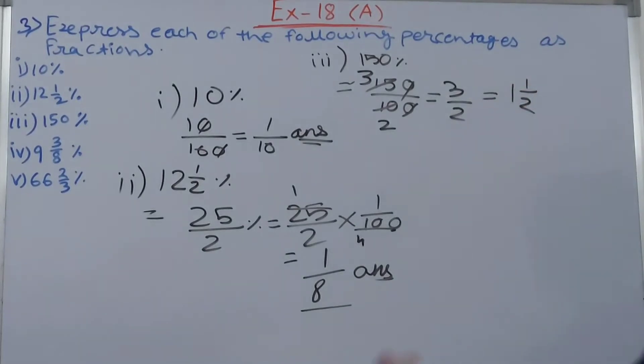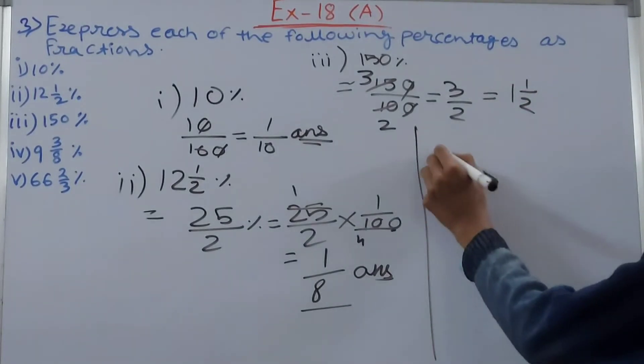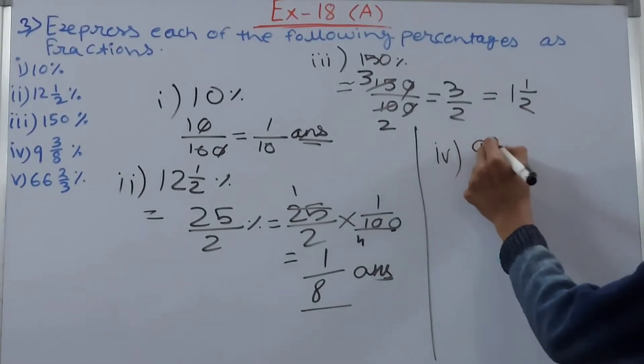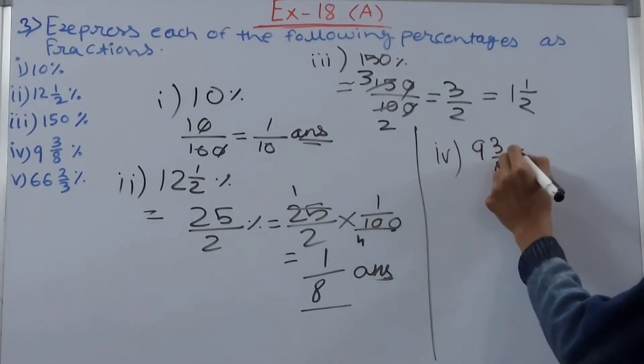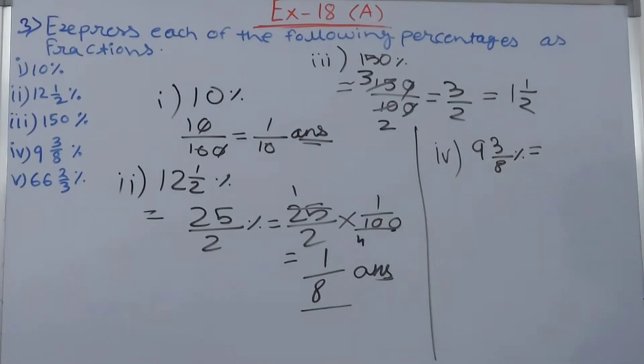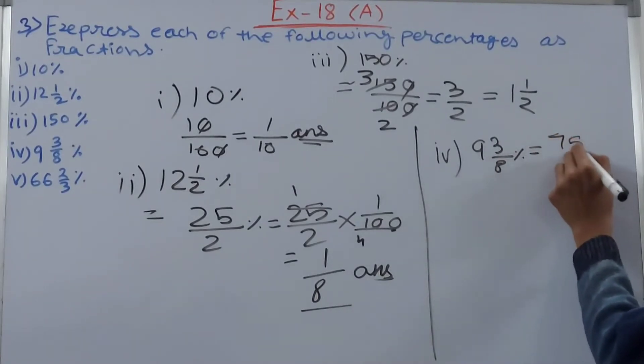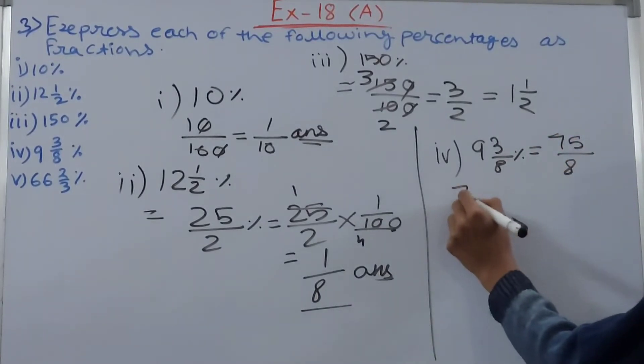Then fourth one, the fourth part, what have we got here, 9 whole 3 upon 8 percent. Same thing, so 9 times 8 is 72 and 3 is 75 upon 8. Now 75 upon 8 will be divided by 100.